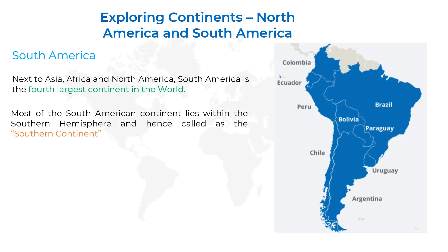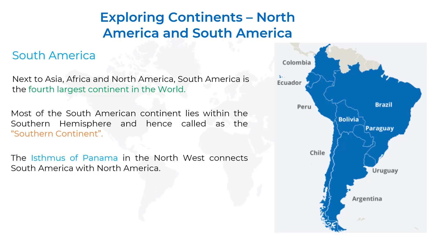The Isthmus of Panama in the northwest connects South America with North America. An isthmus is a small strip of land connecting two large areas. Here, the Isthmus of Panama connects North America with South America, and it is situated in the northwest direction of South America.